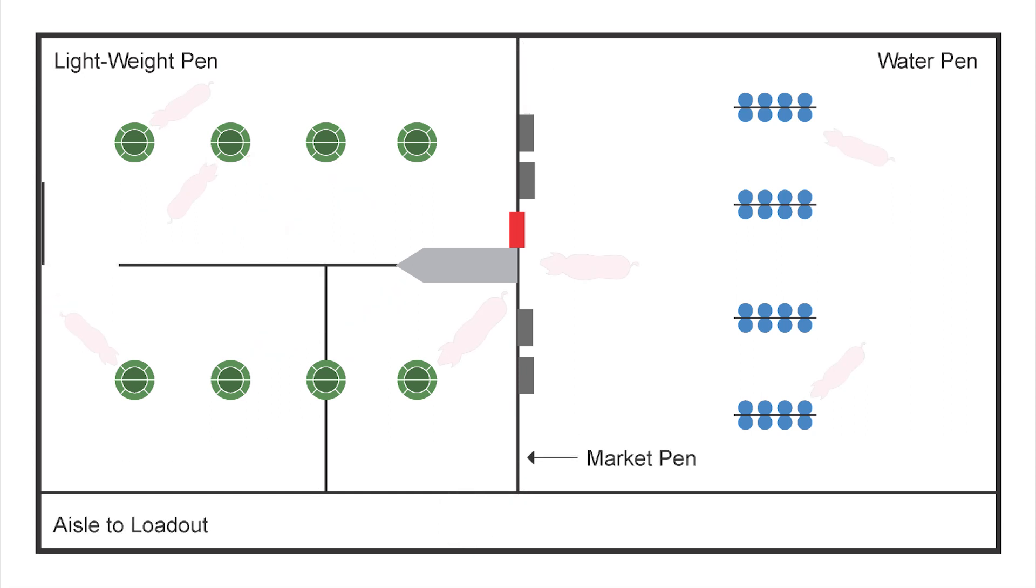When it is time to market pigs, the system is switched to the market sort mode. All animals meeting the sort criteria or weight range are automatically diverted into a pen ready to load. This eliminates manual sorting labor and errors and produces a more uniform load to send to the packer.